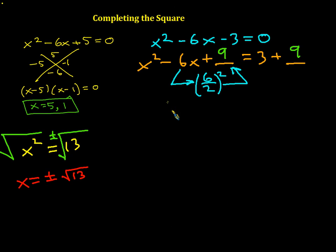So what I do now is I say, well, can I factor this? And I think I can. I think it's x minus 3 times x minus 3, also known as x minus 3 squared. You can double check and make sure I did that correctly. And then that's equal to 3 plus 9, so that's 12.